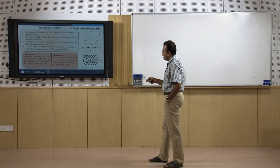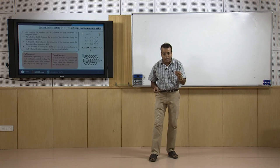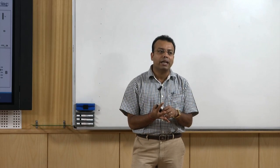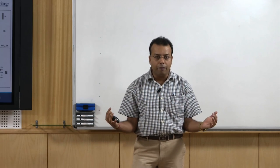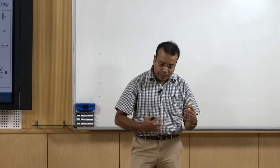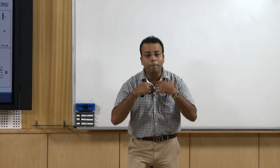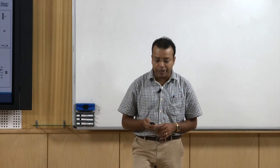Advantages of magnetron sputtering: it is a low cost and easy control method for film growth, especially suitable for large scale film depositions. Disadvantages: it is difficult for the magnetic field to extend outside the target, so thin targets must be used. Not all argon ions hit the target material. By generating a magnetic field near the target materials, all atoms can be captured, made to rotate, prevented from escaping the field, and made to hit the target — so the efficiency is better.